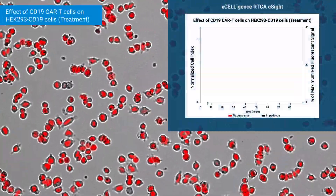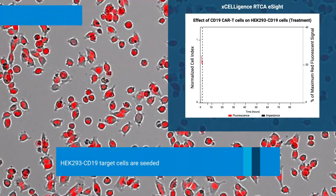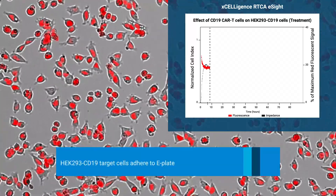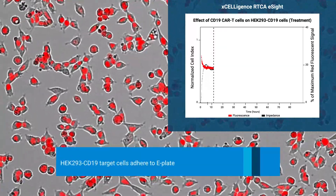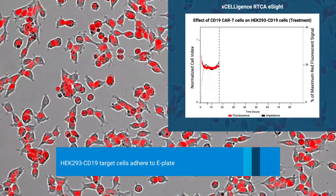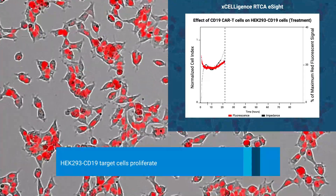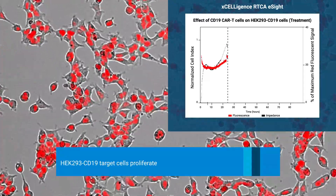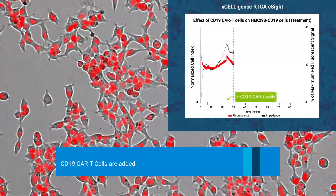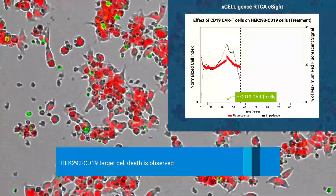To measure potency of CD19 CAR T cells, HEK 293 CD19 target cells are seeded into another E-plate well. Similar to the control, the target CD19 cancer cells adhere to the plate and start to proliferate. However, after the addition of CD19-specific green fluorescently labeled CAR T cells, CD19 target cell death is observed.